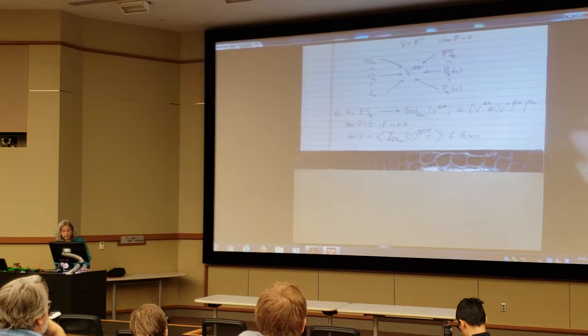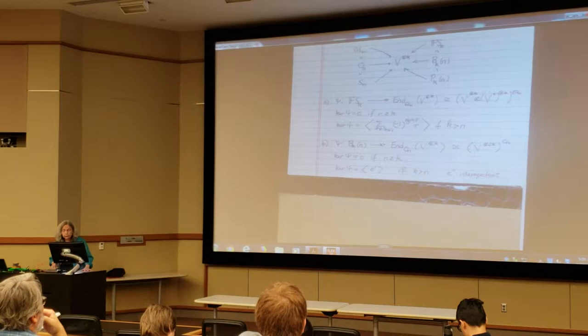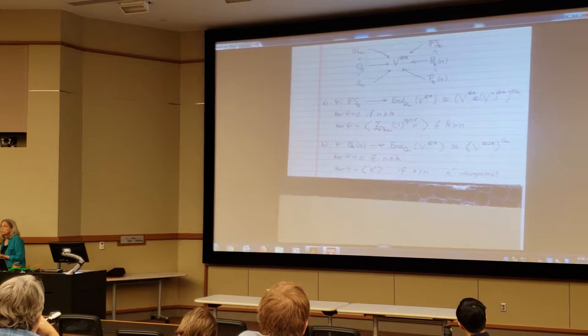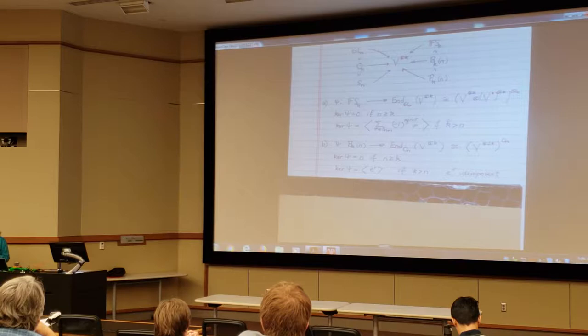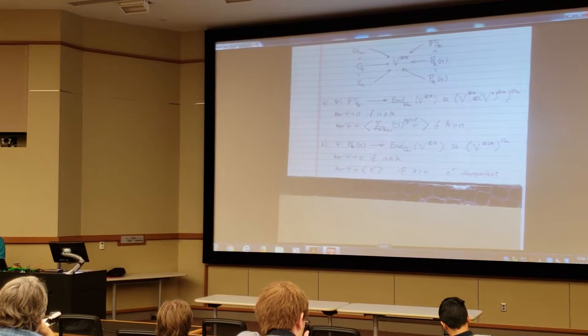In the Brauer case, it's a somewhat similar situation. Because we have a bilinear form, symmetric non-degenerate bilinear form on V, we can identify the dual with the vector space V as a G module. So actually what we're getting is invariants in V tensor 2K.